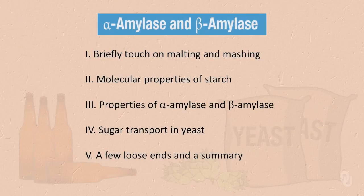Welcome to this segment of The Chemistry of Beer. In this segment, we will discuss two enzymes, alpha amylase and beta amylase, that are the main ones responsible for converting much of the stored carbohydrate in barley seeds into a form that can be used by yeast. To overview what we will discuss, we will first briefly touch on malting and mashing.